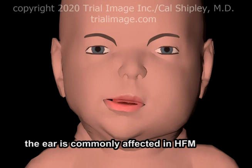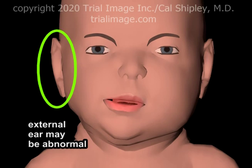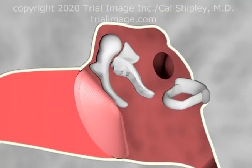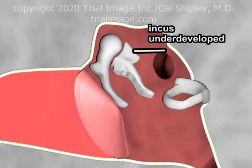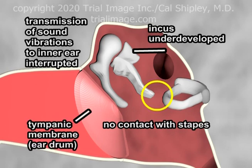The ear is commonly affected in HFM. The size and shape of the external ear may be abnormal, and the middle ear may also be affected, with underdevelopment of one or more of the ossicles. In this example, the incus is underdeveloped, resulting in a loss of contact with the stapes. This interrupts the transmission of sound vibrations from the tympanic membrane, or eardrum, to the inner ear, and results in hearing impairment on the affected side.